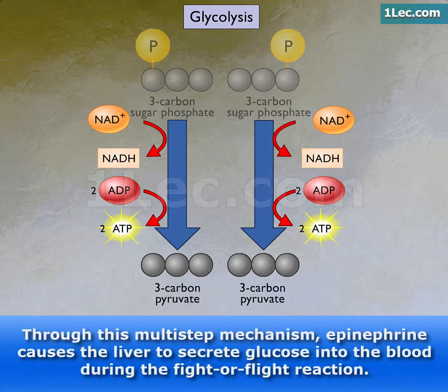Under aerobic conditions, the pyruvate is further oxidized to yield more ATP, and under anaerobic conditions, the pyruvate is converted into lactic acid.